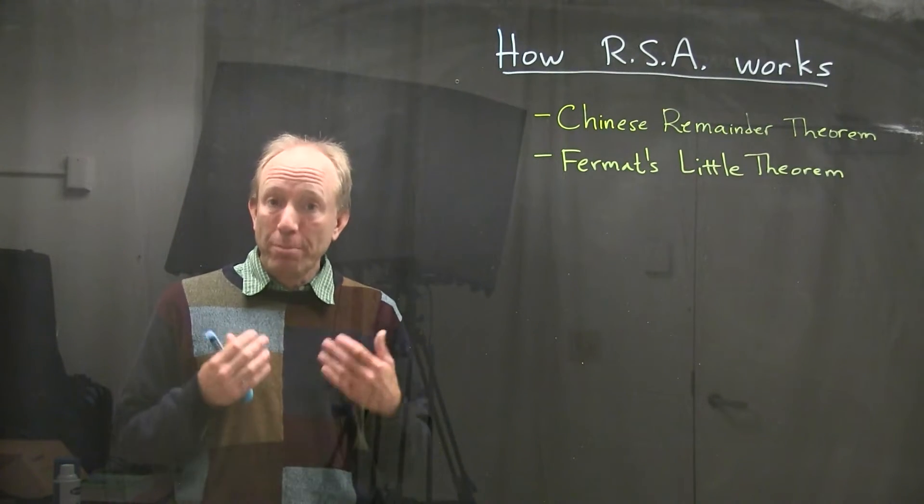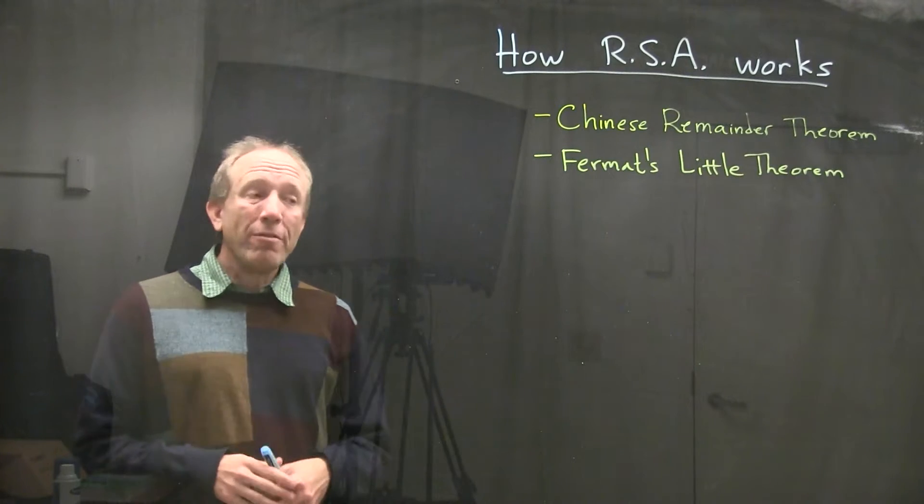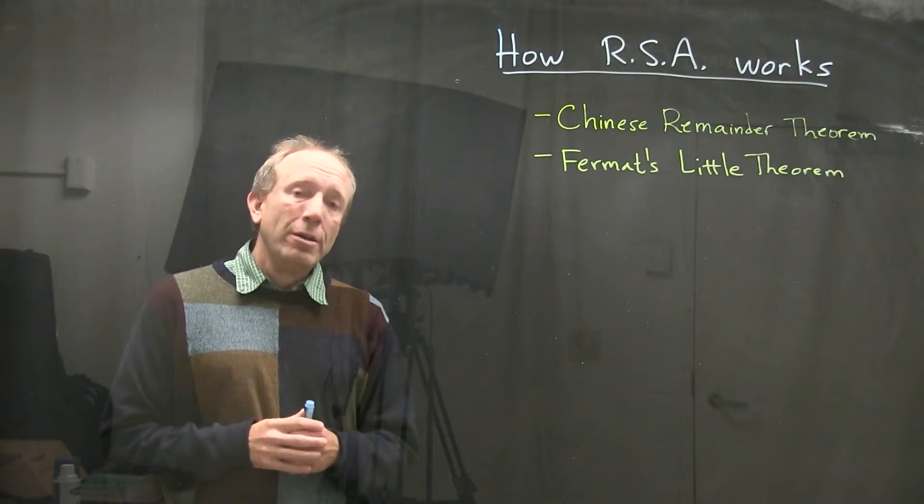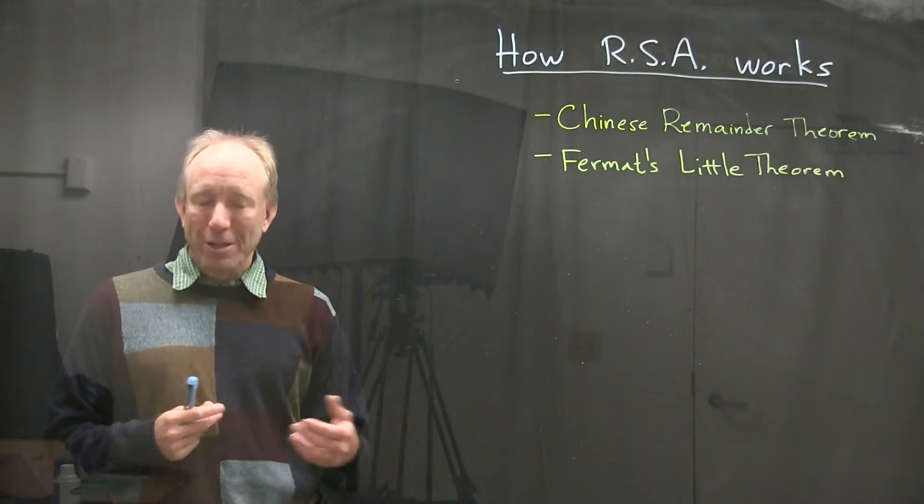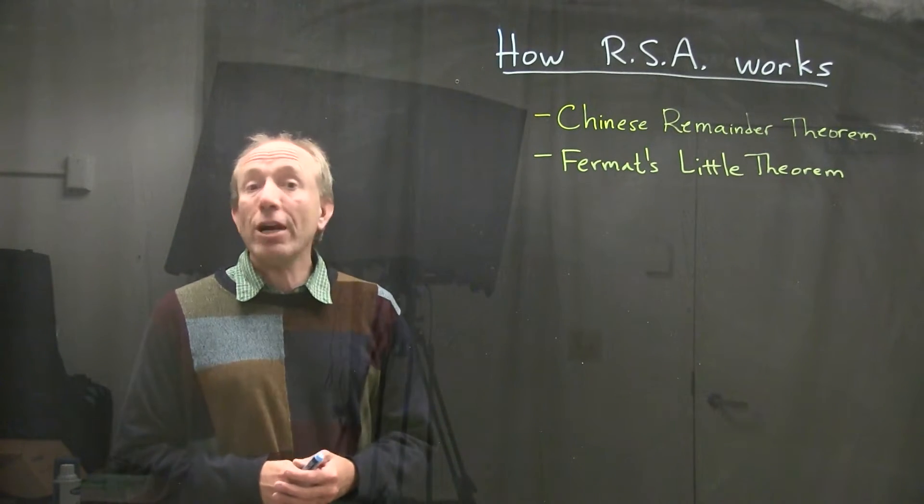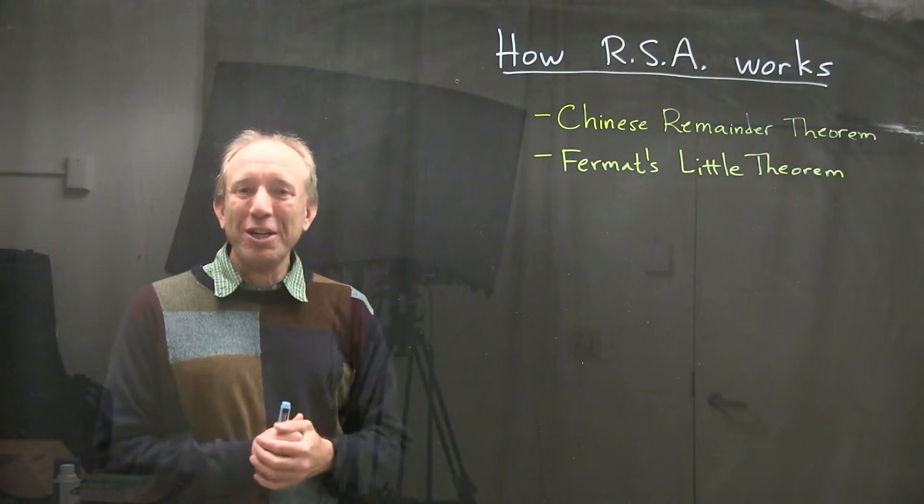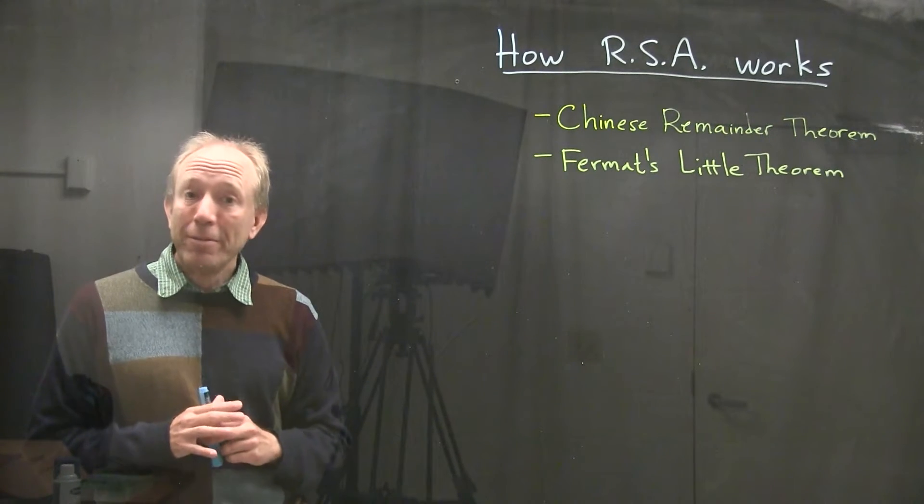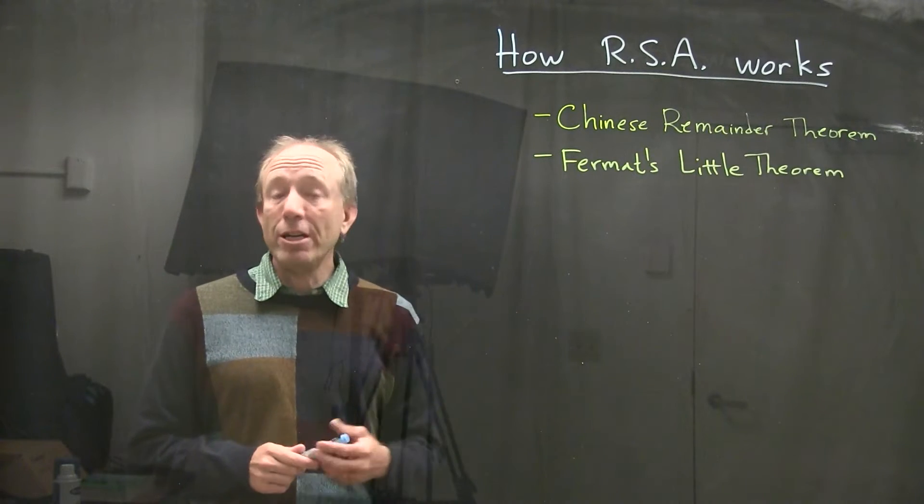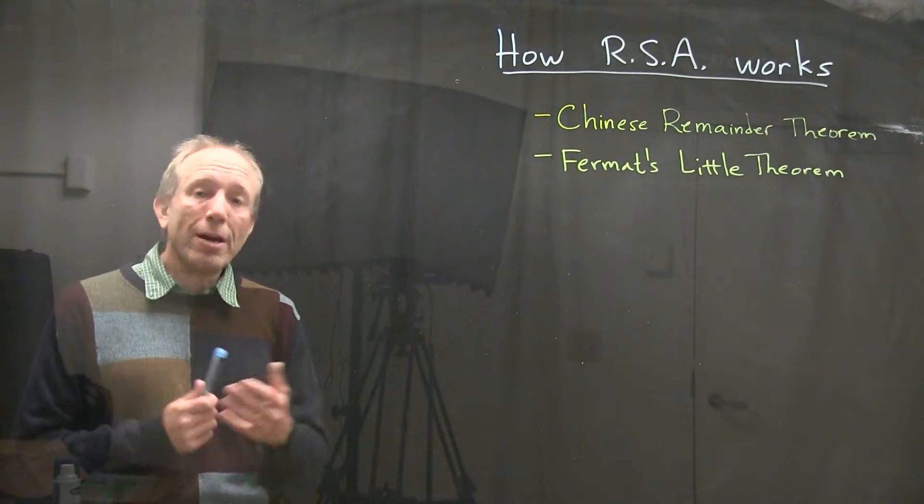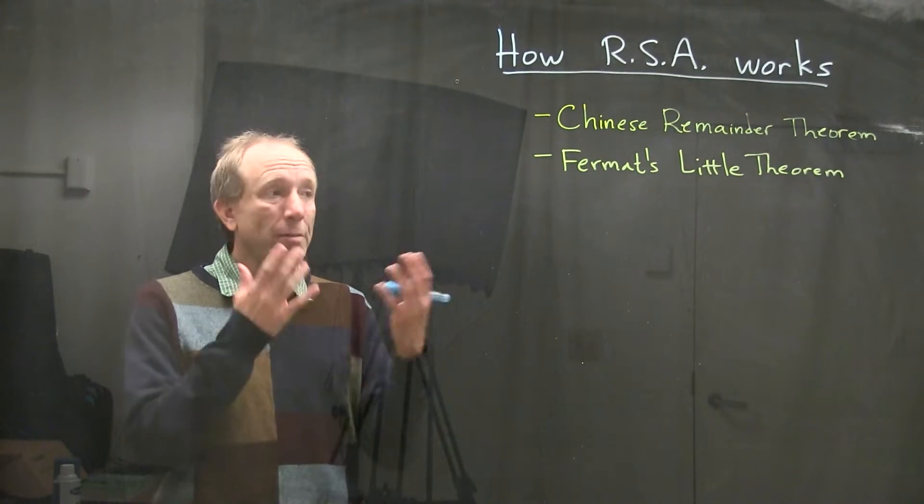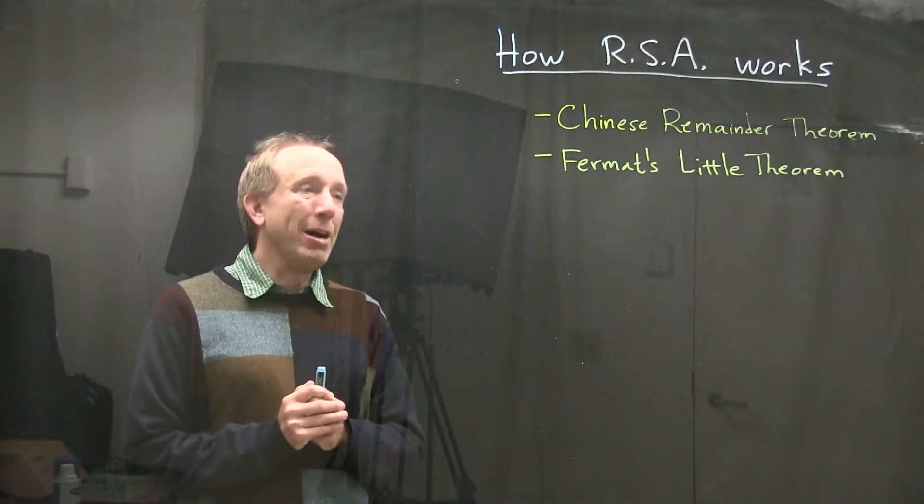There are a couple of important theorems that provide the core background for how this process works. Most people in the real world applying RSA don't ever have to think about the Chinese remainder theorem or Fermat's Little theorem because it really is in the background. But for those of us who have an interest in understanding how the process works from a theoretical perspective, might benefit from this quick overview.